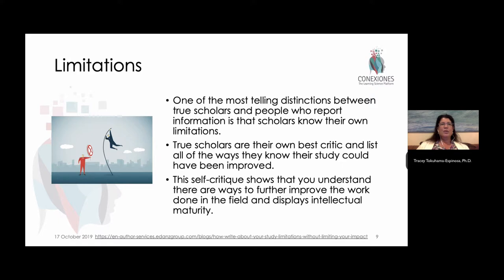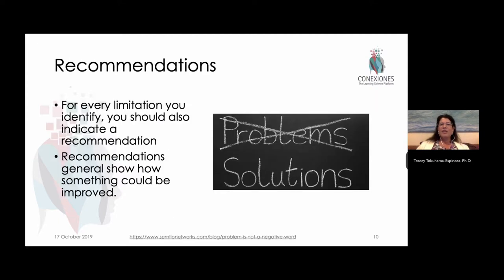Another key element to the conclusions is to make sure that you indicate the limitations. This is when you get to be your own most critical reader and anticipate what other people might say about your paper — they might say your methodology wasn't executed completely, or maybe your literature was too limited. Make sure you give yourself that critical look and curtail those criticisms by actually indicating them in the limitations of your study. And finally, you close up by taking each one of those limitations and turning it into a recommendation.